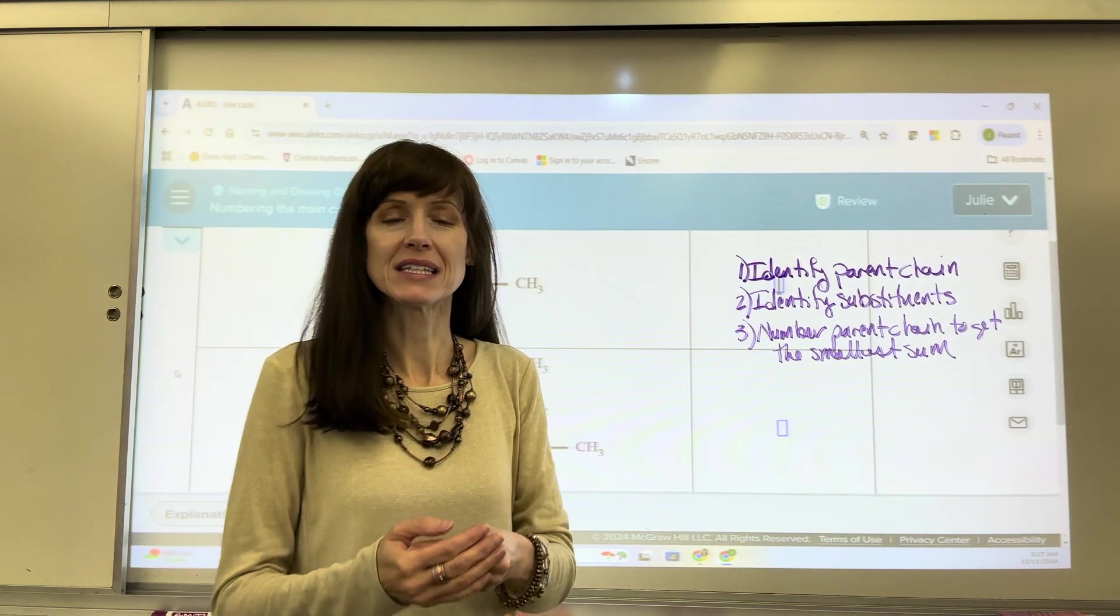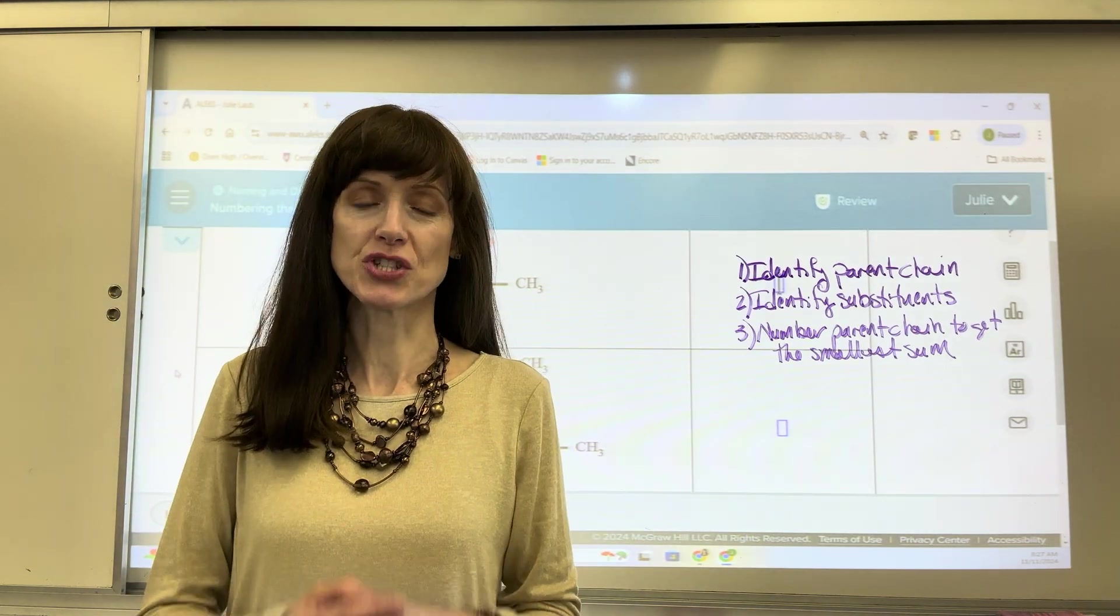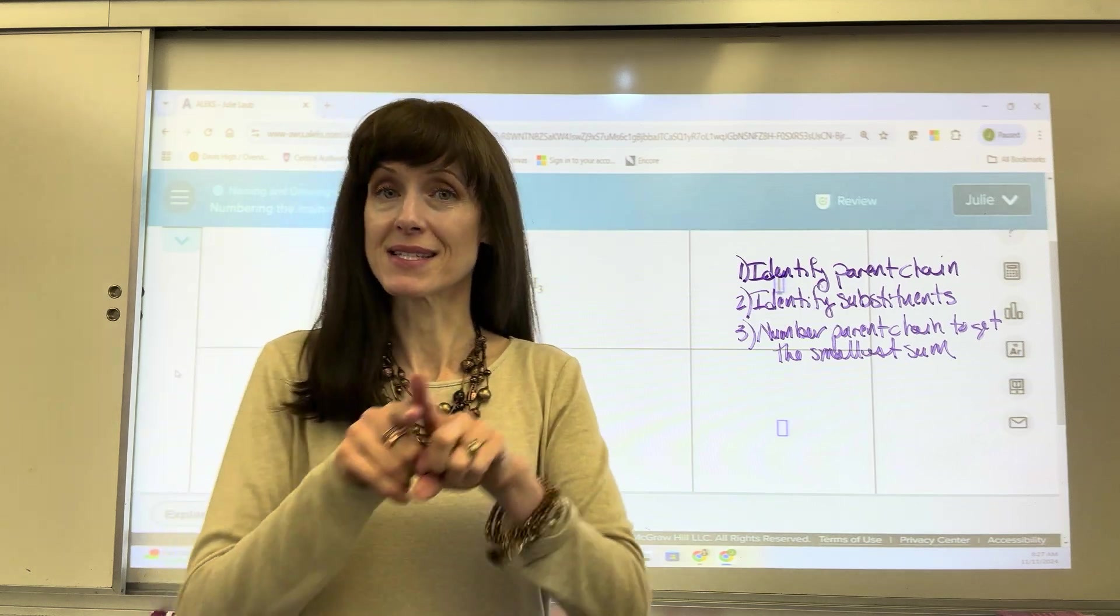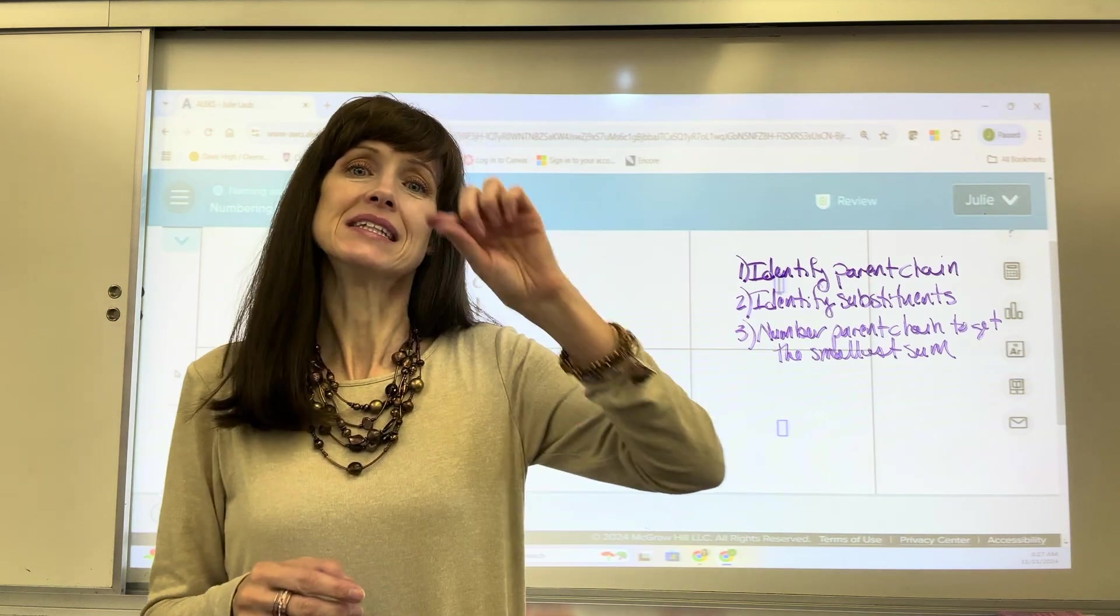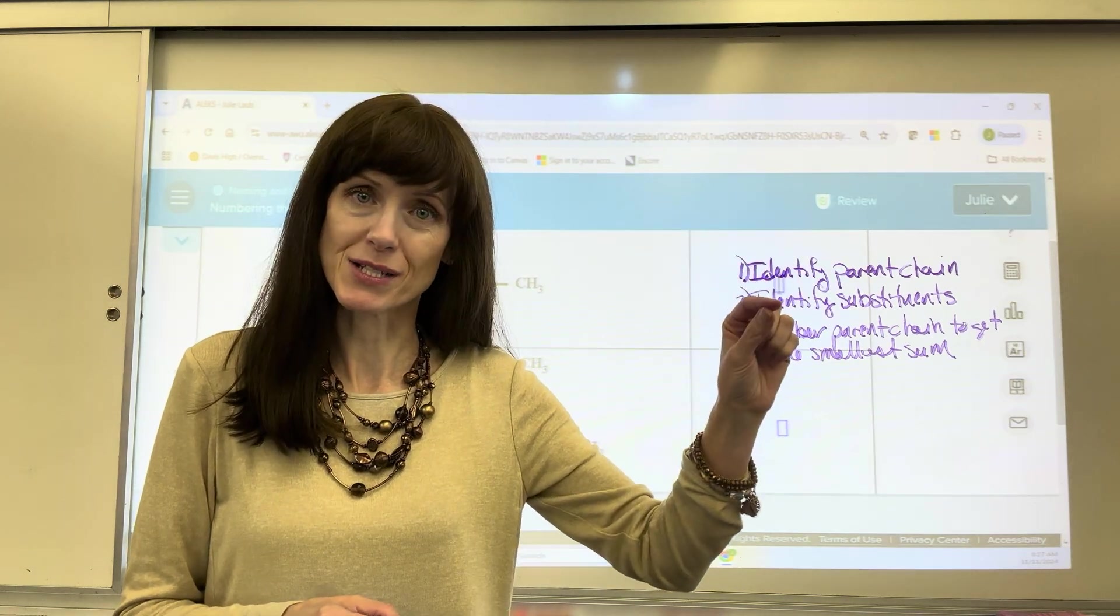I have a list of three steps for you. Number one, you have to identify the longest continuous chain of carbons. Now remember this doesn't have to be straight, it doesn't have to be linear. They can be branched, it just has to be continuous carbon, carbon, carbon bonded to one another.